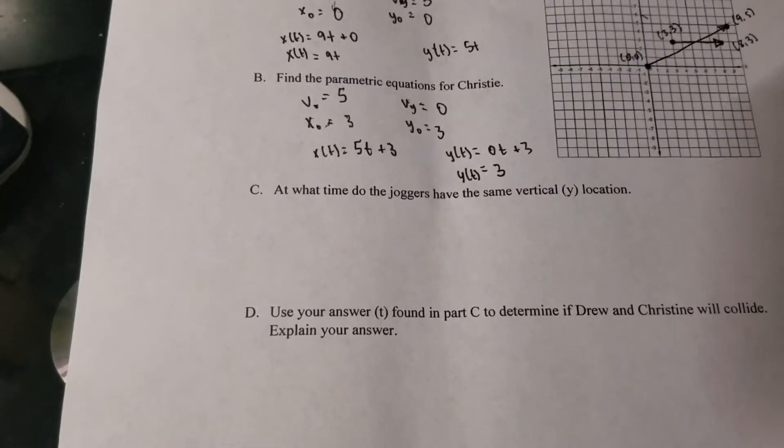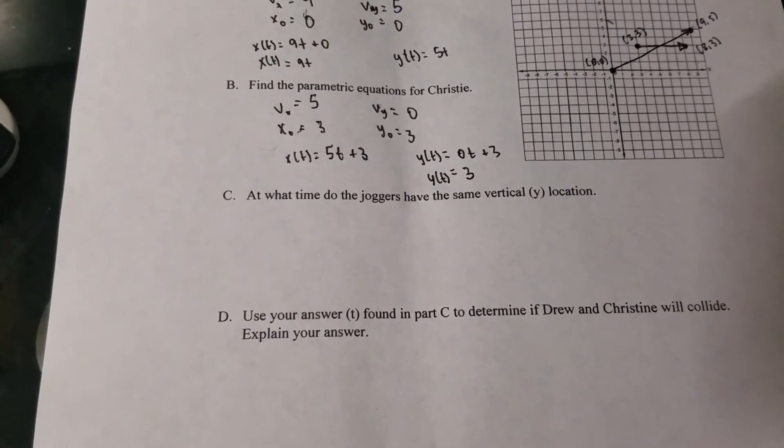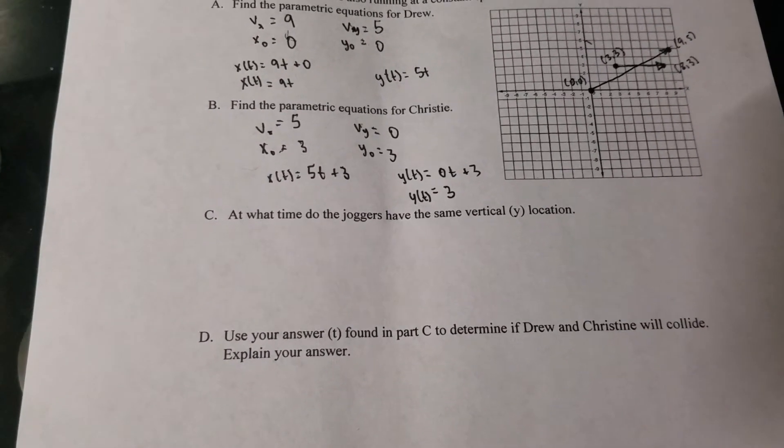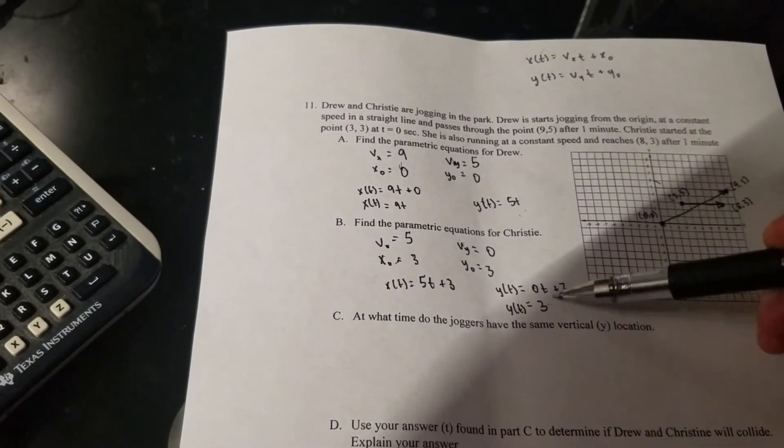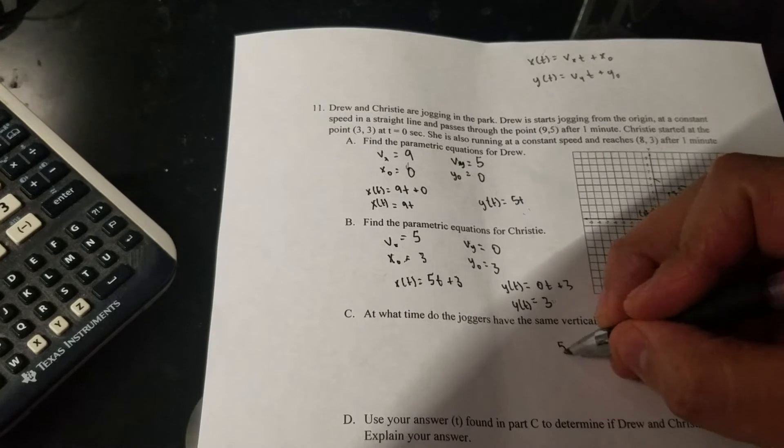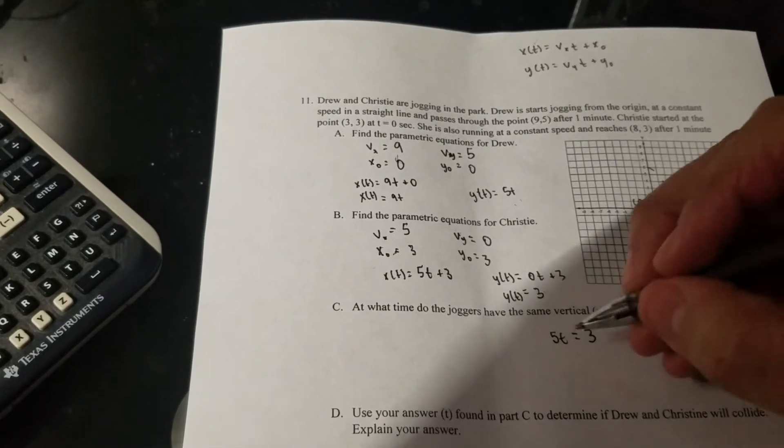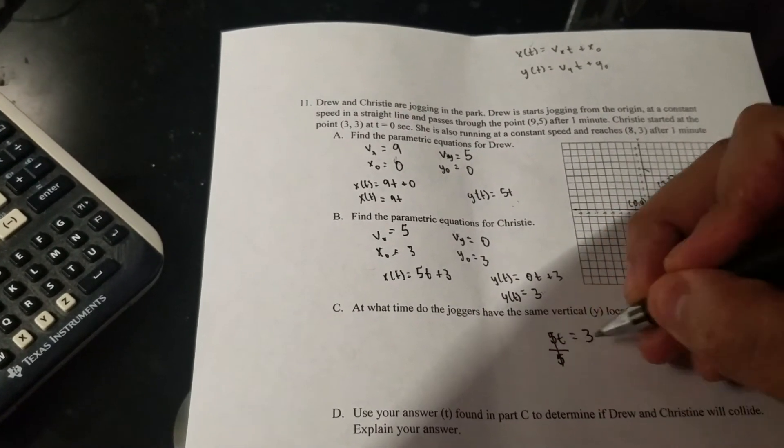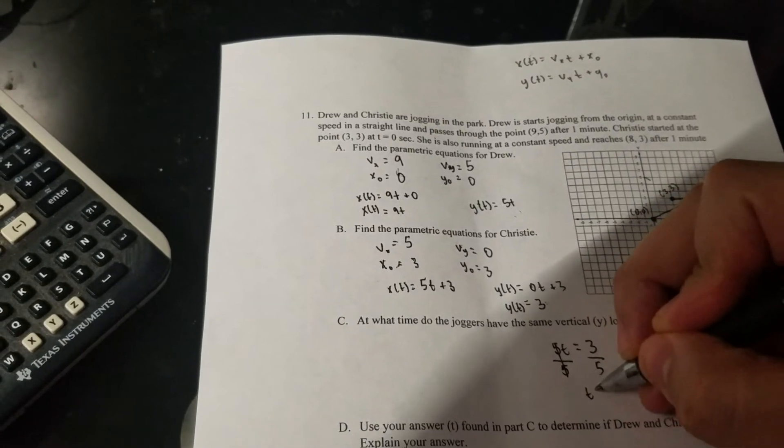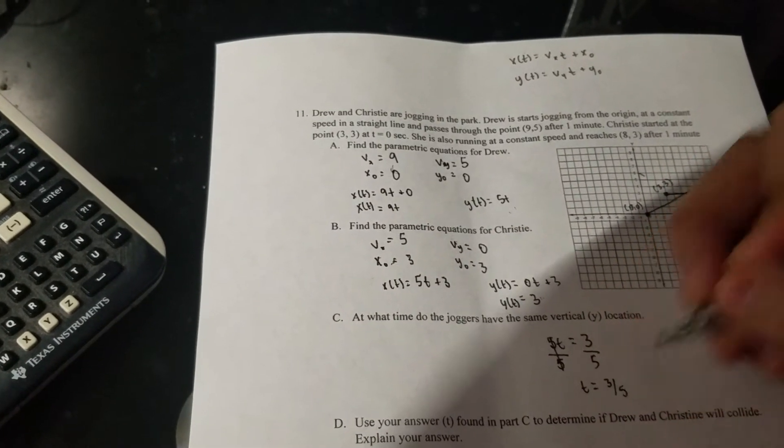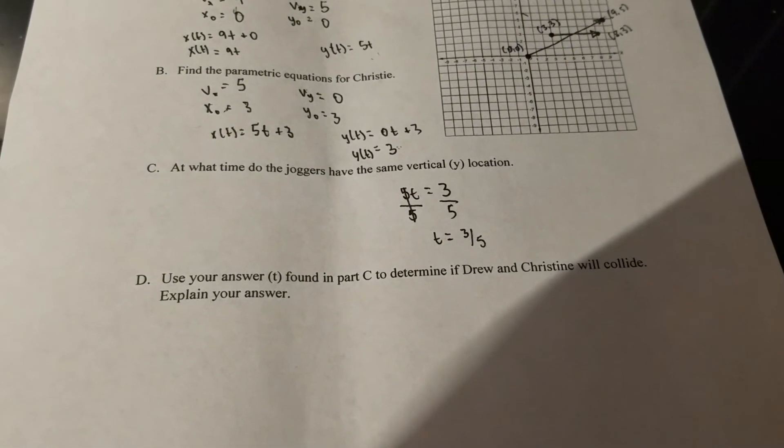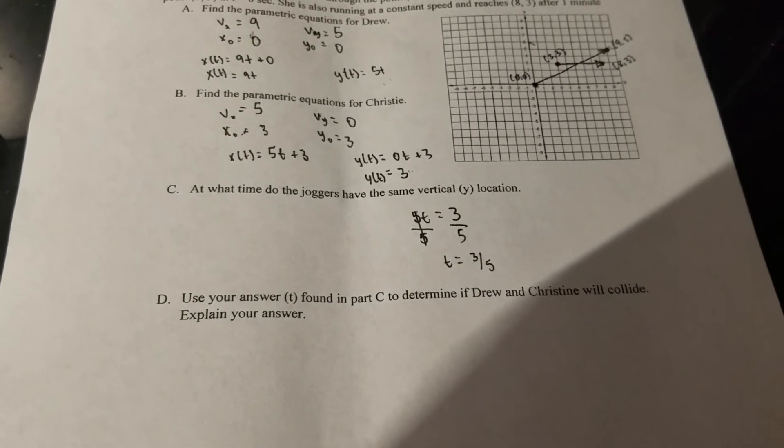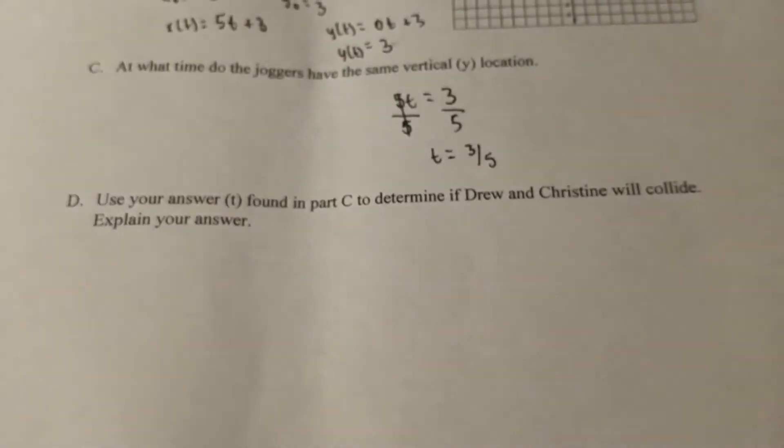If I move over, at what time do the joggers have the same vertical location, the y they say here. So what I'm going to do is I'm going to set these two equal to each other, so 5t is equal to three and I'm gonna solve for t. So t is equal to three fifths. That is when they are at the same y location.